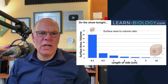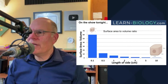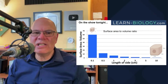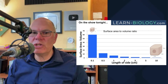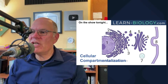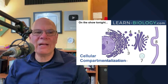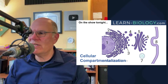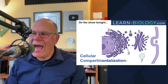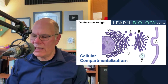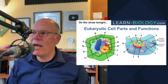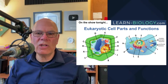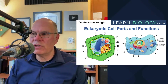What we're going to talk about tonight are the issues related to the size of cells, and that's all about the surface area to volume ratio. In addition to that, we're going to talk about cellular compartmentalization, how eukaryotic cells are organized, and we'll talk about eukaryotic cell parts and their functions.